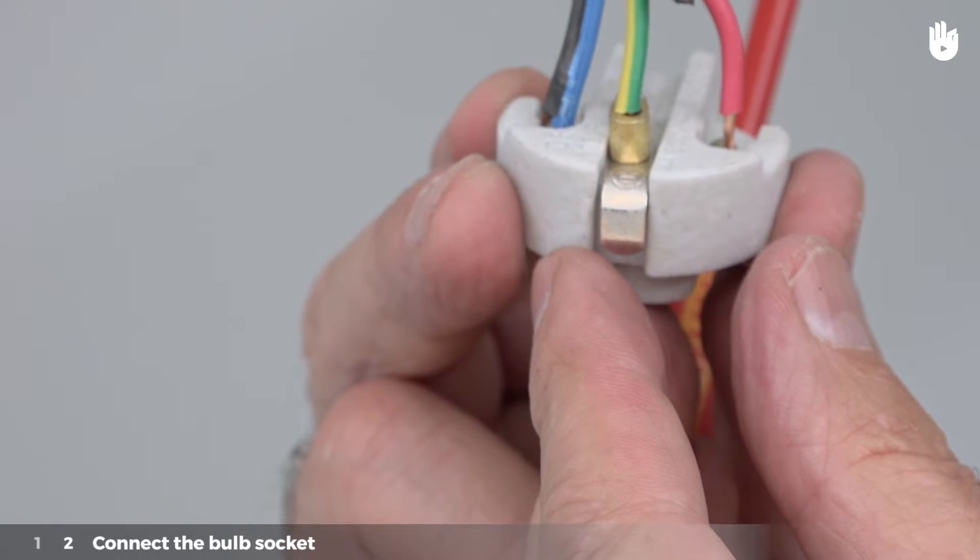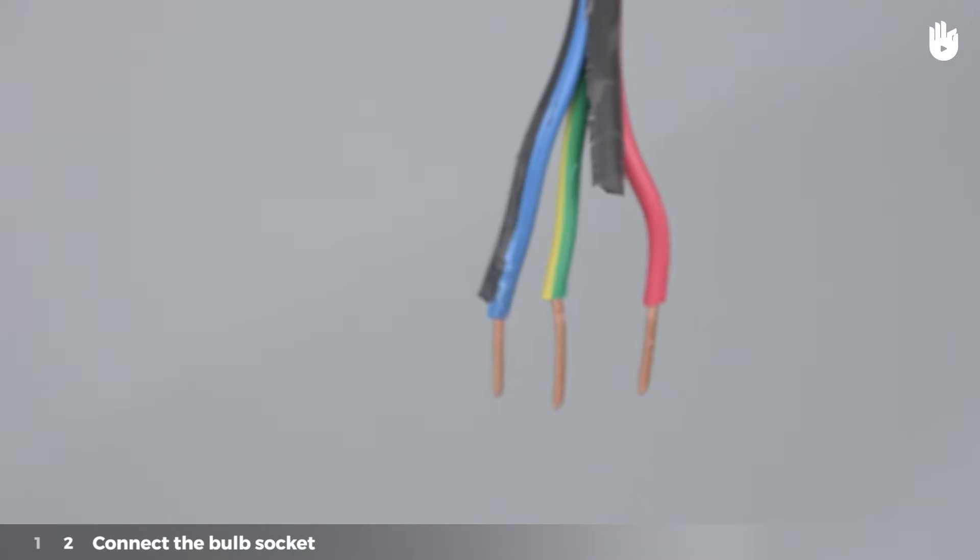If you have non-metallic materials and equipment, connecting the green and yellow ground wire is not necessary.